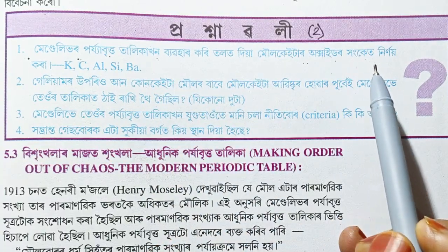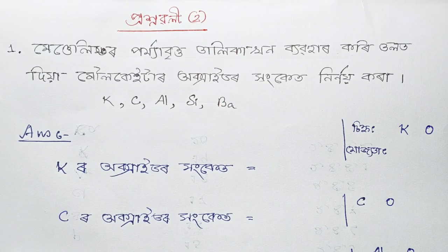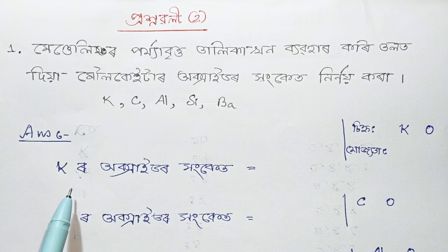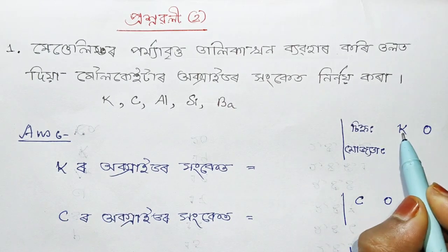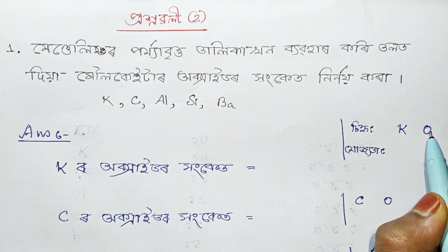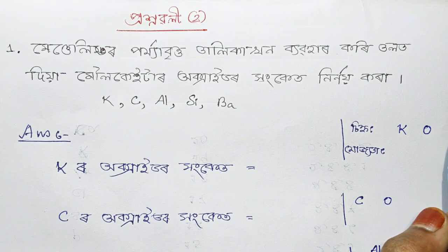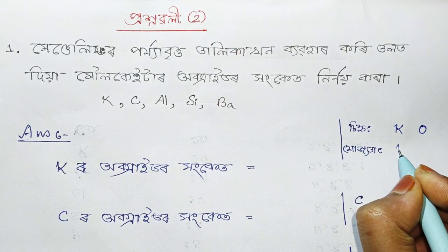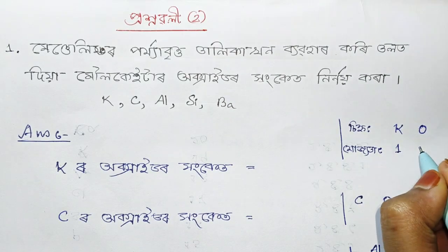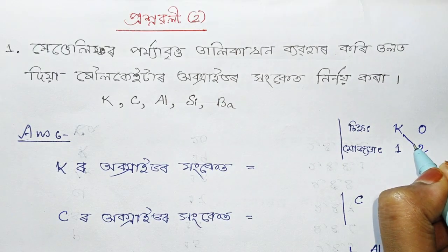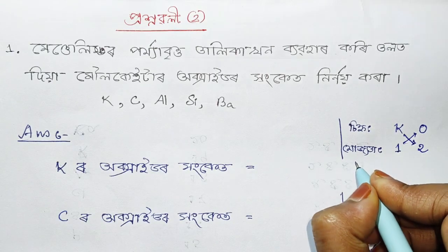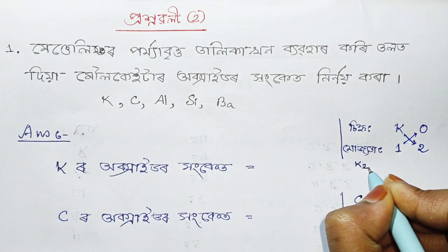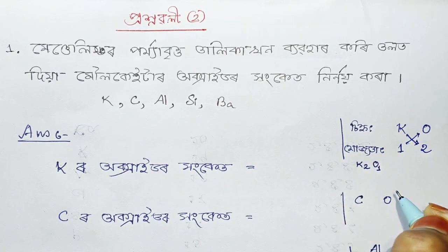We will be reading oxide. We have to read the two bits of this. When we take the exam, we will be using oxygen — the transfer of valency. Potassium is 1 and oxygen is 2. We cross the same way.